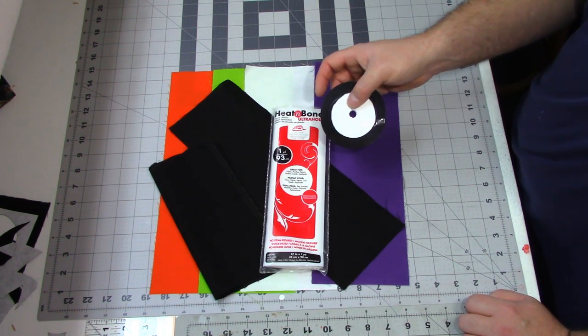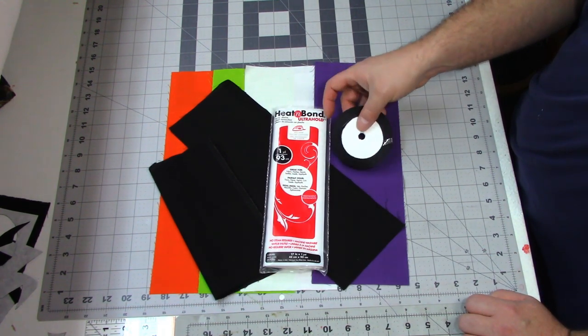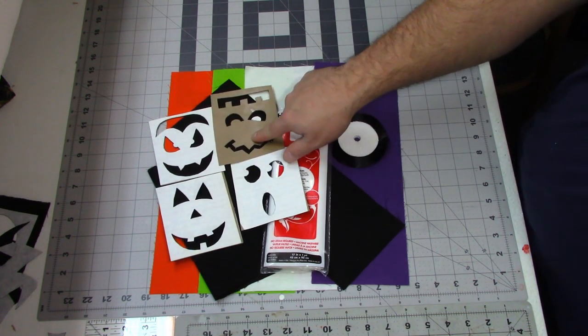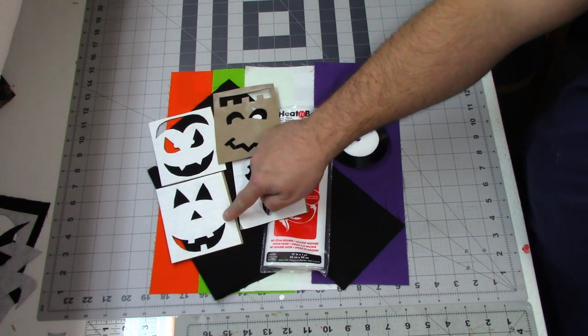You're also going to need some quarter-inch ribbon. Today, I just have the satin kind. And finally, you're going to need your face templates. Like I said, I have a ghost, Frankenstein's monster, a vampire, and a pumpkin.